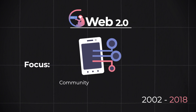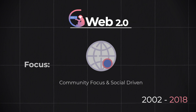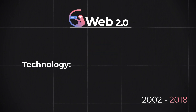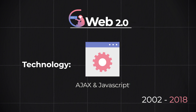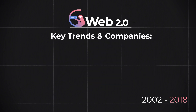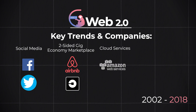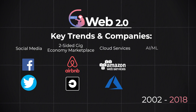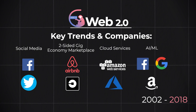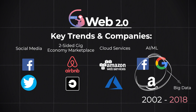Web 2.0 is community-focused and social-driven. The technology used to power Web 2.0 is Ajax and JavaScript. In Web 2.0, many key trends and companies emerged, like social media with Facebook and Twitter, two-sided gig marketplaces like Airbnb and Uber, and cloud services like Amazon Web Services and Microsoft Azure. Trends like artificial intelligence and machine learning are dominated by Facebook, Google, and Amazon, because these big tech companies have big data — a lot of high-quality user data to work with.